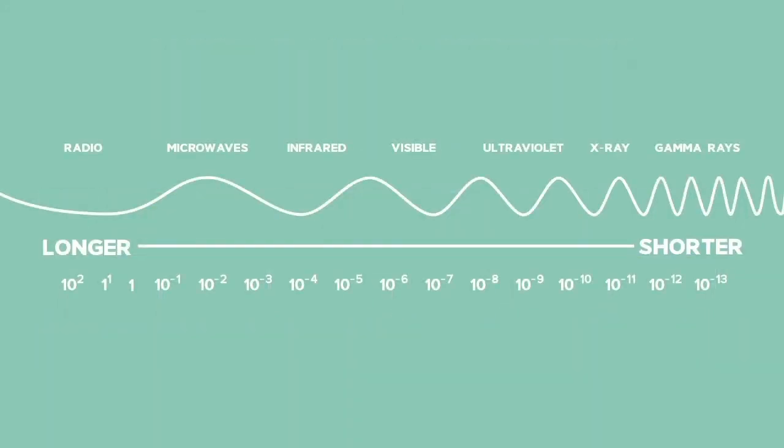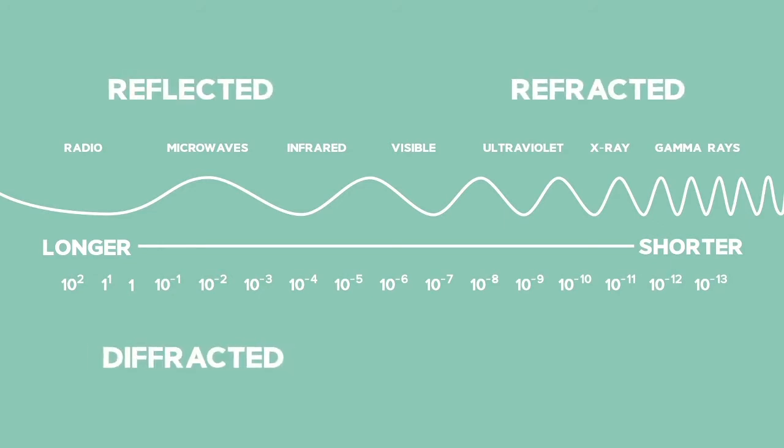All of these waves in the spectrum have typical wave properties, which means they can be reflected, refracted, diffracted and experience interference.